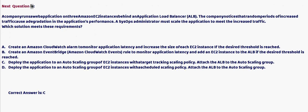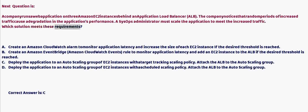A company runs an application on three Amazon EC2 instances behind an Application Load Balancer (ALB). The company noticed that random periods of increased traffic cause a degradation in the application's performance. A SysOps administrator must scale the application to meet the increased traffic. Option A: Create an Amazon CloudWatch alarm to monitor application latency and increase the size of each EC2 instance if the desired threshold is reached.